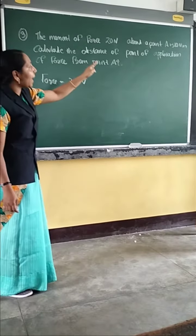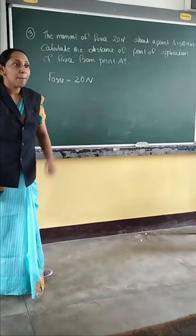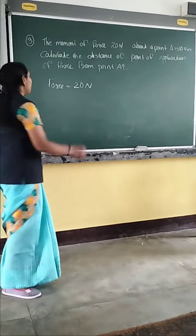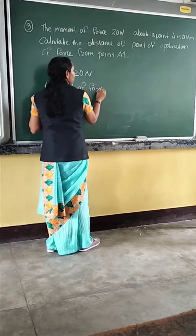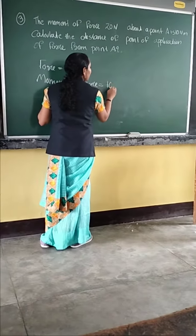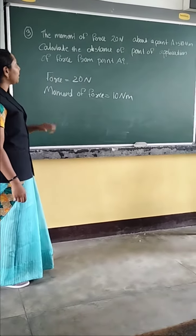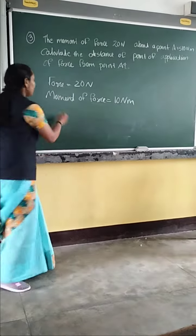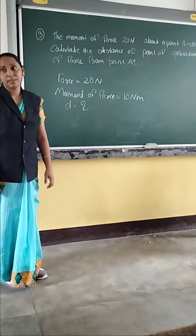About the point A, the moment of force is 10 Newton meter. The unit of moment of force is Newton meter. That means moment of force equal to 10 Newton meter. Calculate the distance of the point of application of the force from the point A. So that means we want to find out the distance.